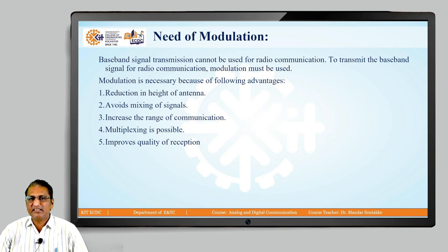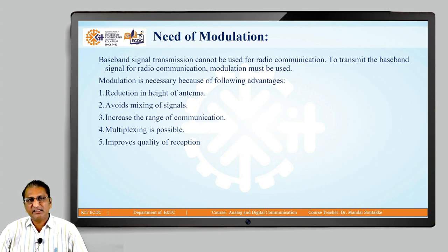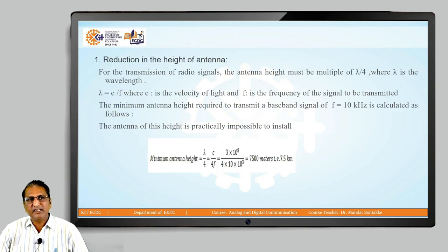Baseband signal transmission cannot be used for radio communication directly; modulation must be used. The key reasons why modulation is necessary are: reduction in height of the antenna, avoiding mixing of signals, increasing the range of communication, enabling multiplexing, and improving the quality of reception.